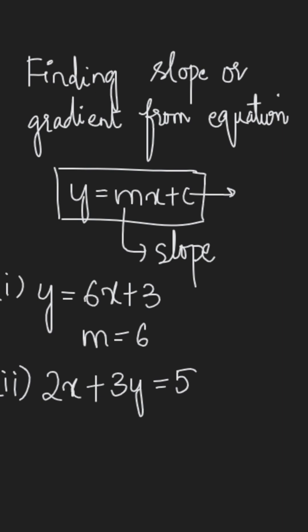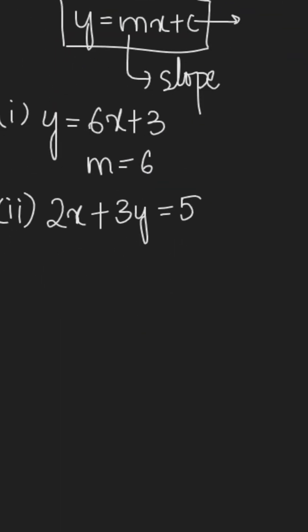So to find out the slope from this equation, you need to convert this equation into the slope intercept form. For that, rearrange this equation making y as a subject. From here, 3y equals 5 minus 2x, and y equals 5 minus 2x whole divided by 3.